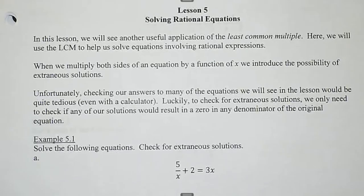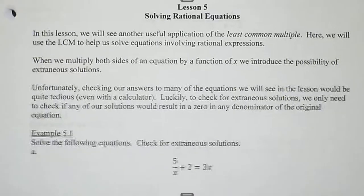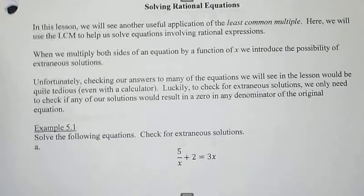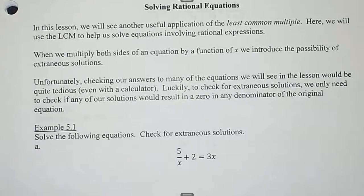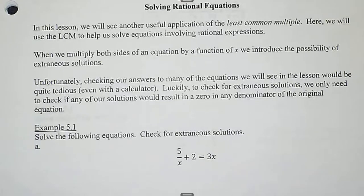Today we'll be working on lesson 5 of unit 11 and 6. In this lesson we're going to use another application of the least common multiple. Remember how to get the least common multiple — it has to have everything: everything that the first thing has and everything the second thing has.